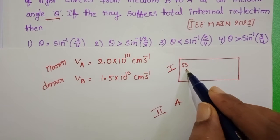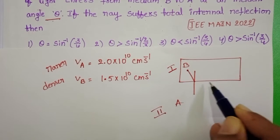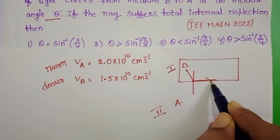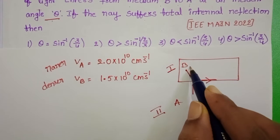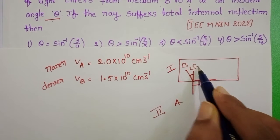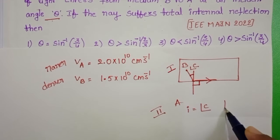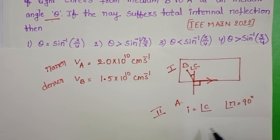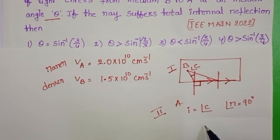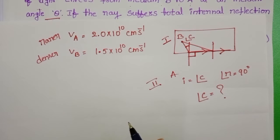At a particular angle of incidence, the refracted ray grazes along the interface. That angle of incidence is called the critical angle. So at the critical angle of incidence, the angle of refraction is equal to 90 degrees. So first let us find out the critical angle by applying Snell's law.